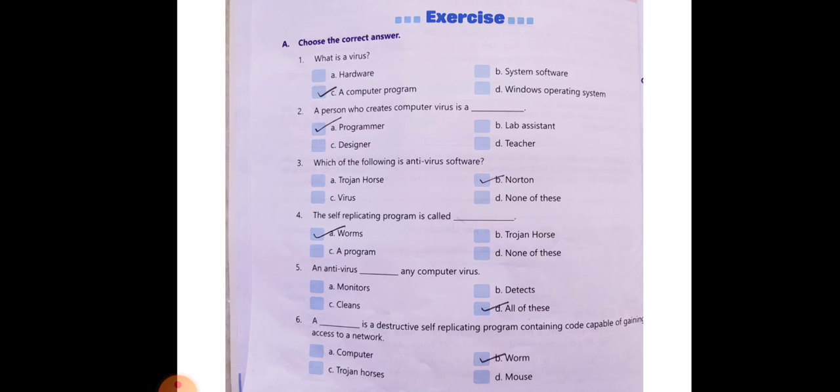Now part 4, the self-replicating program is called Worms. Because Worms can replicate on their own. Replicate means you can make copies. So this answer is Worms.